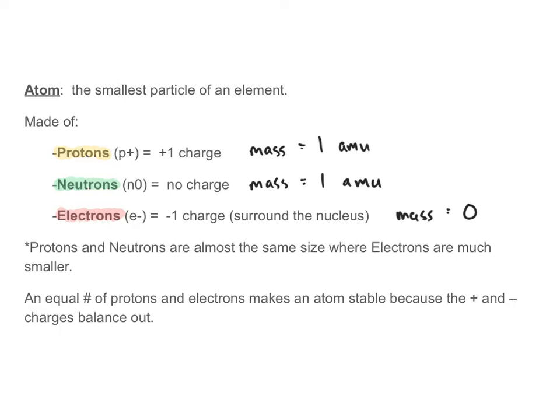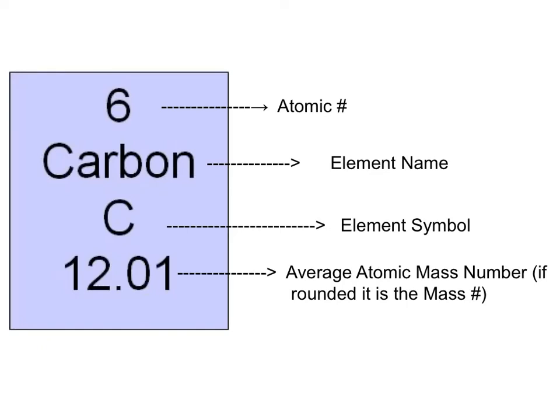The last statement on our review says an equal number of protons and electrons makes an atom stable, because the positives and negatives cancel out. So positive protons cancel out with negative electrons. Now when we look at the periodic table — we've already sent you a version — I'm going to be using the one sent out in class.